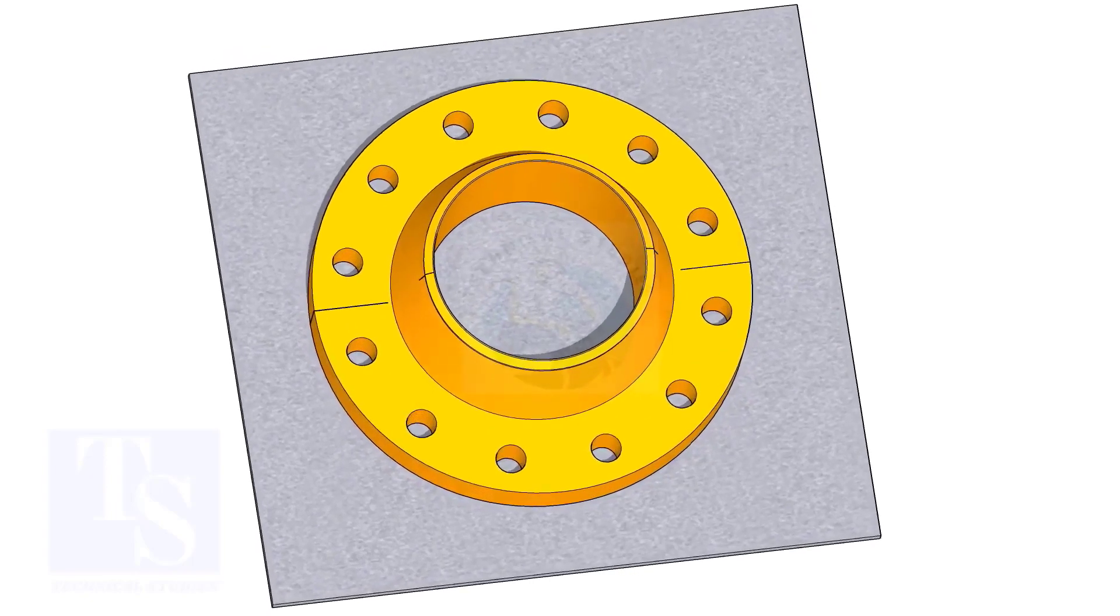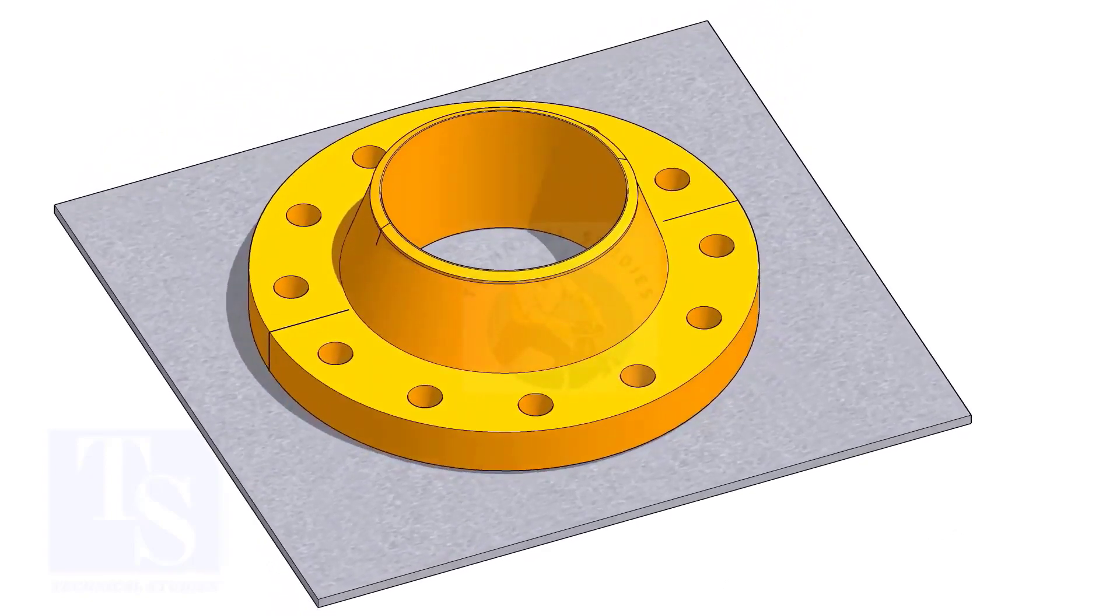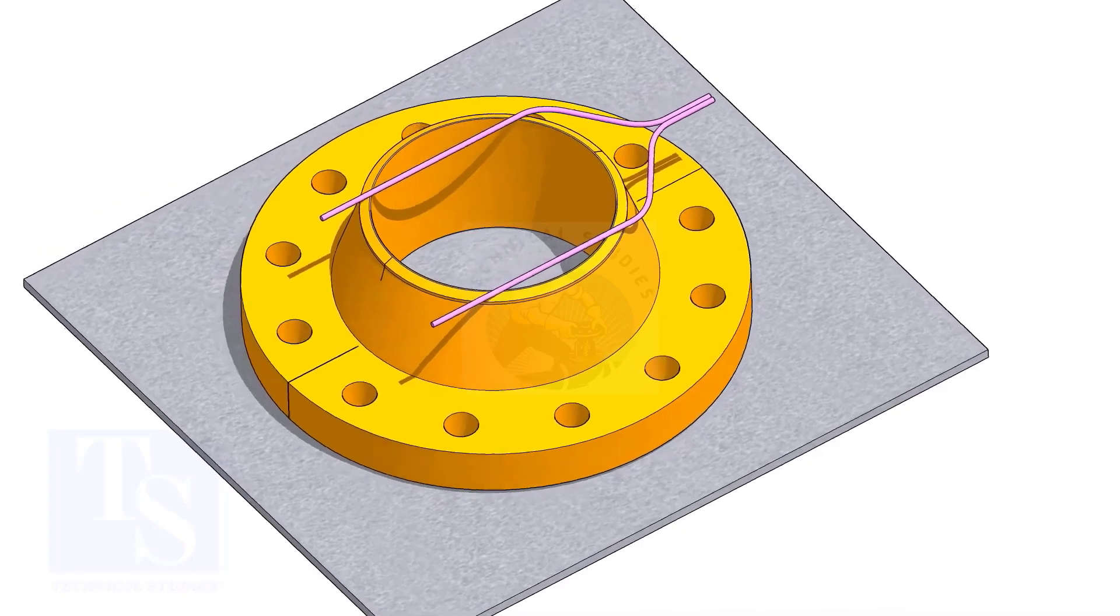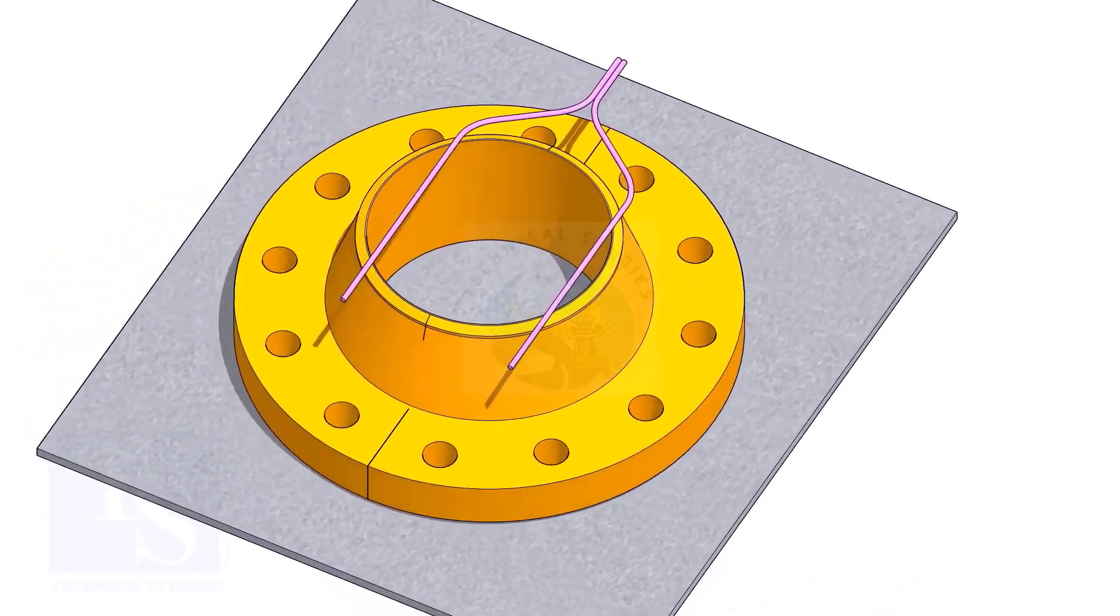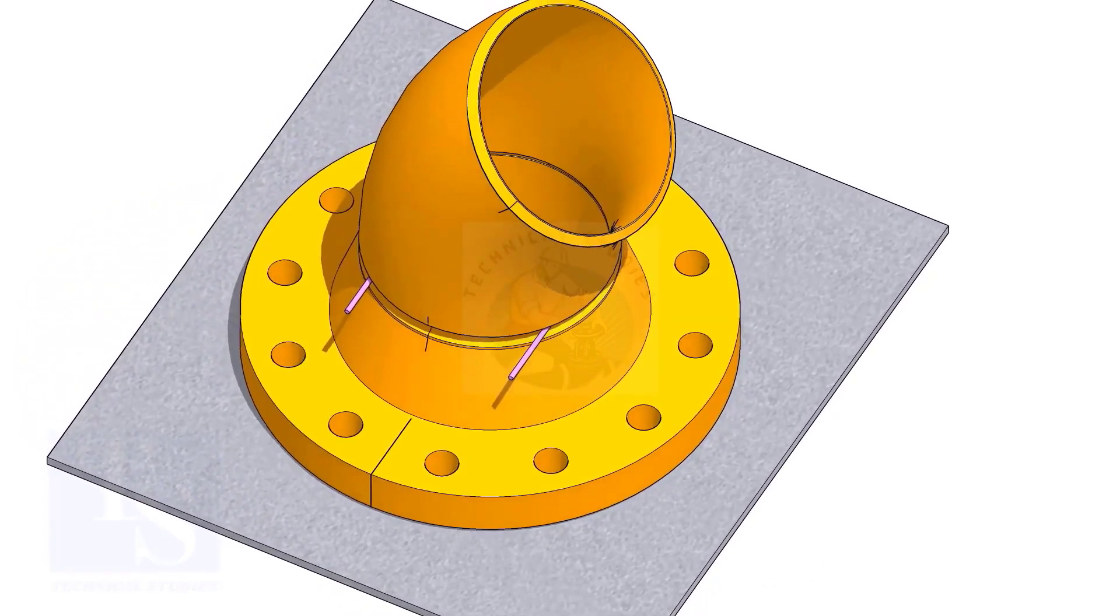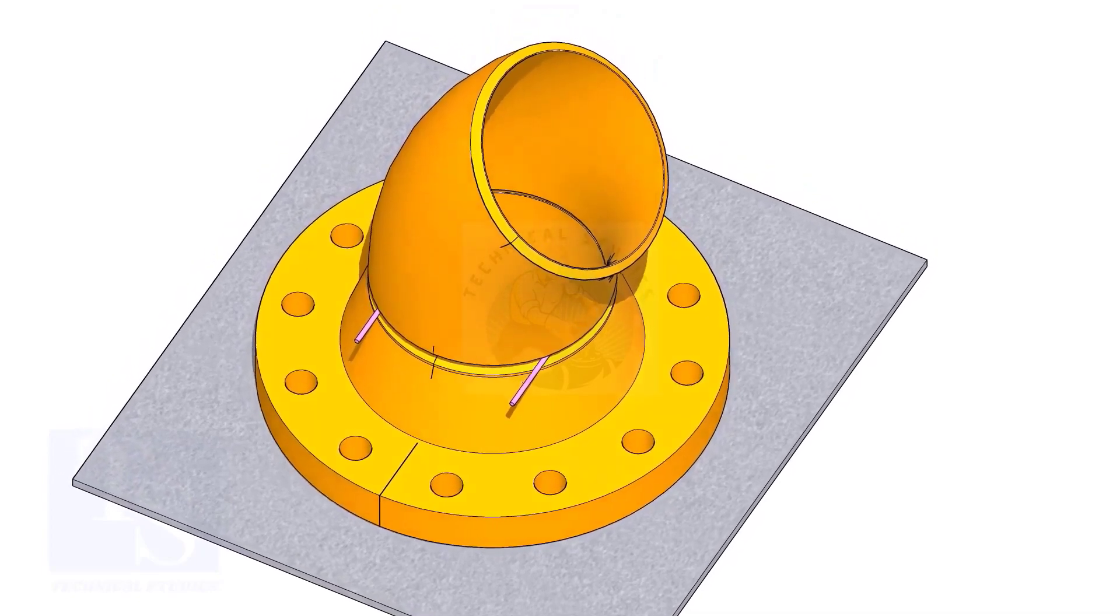Put the flange on a straight plate. Put the gap rod and the elbow on it. Match the center lines of the elbow and the flange.